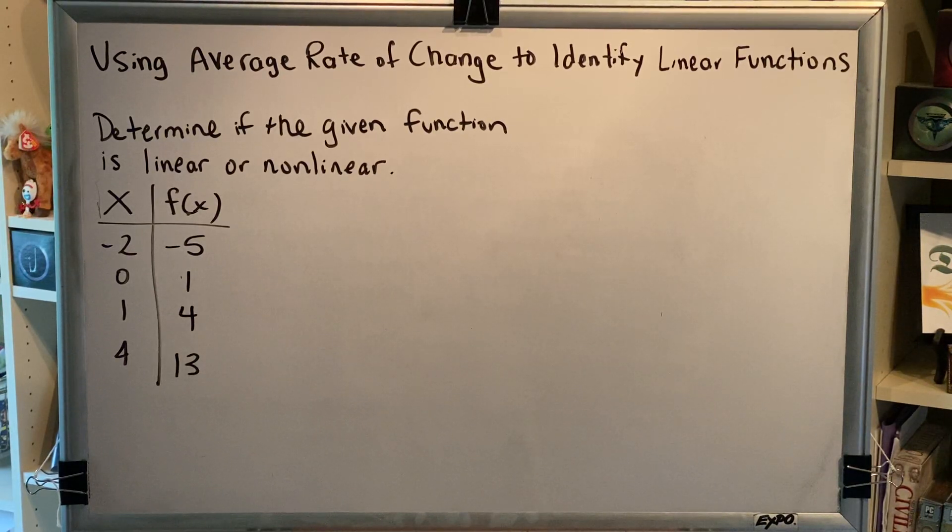Simply compute the average rate of change, also known as slope, between each pair of adjacent points. If the average rate of change, the slope, is always the same, the points represent a linear function.